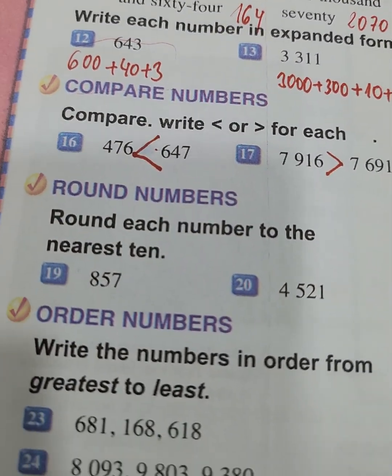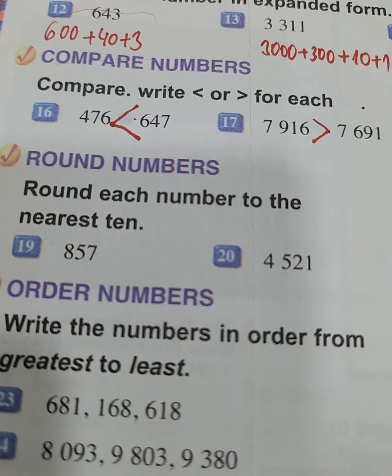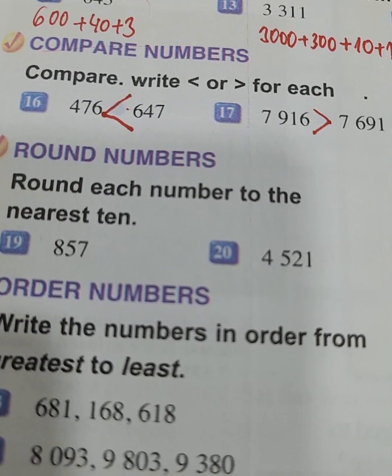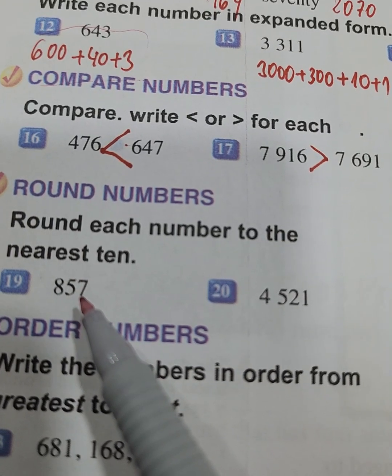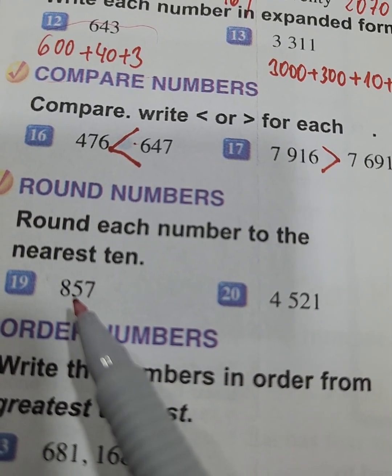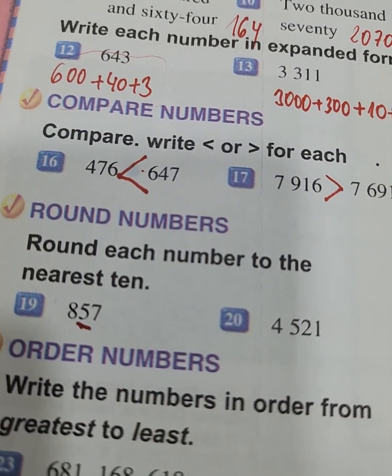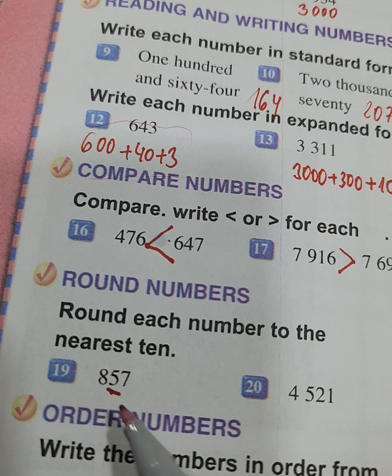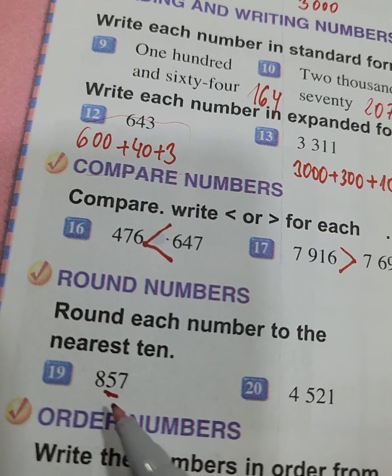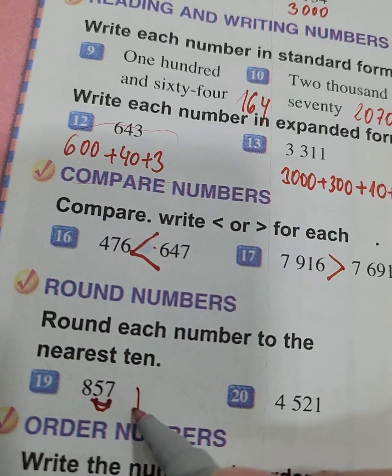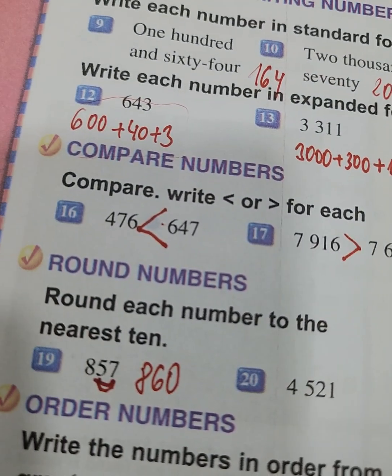We have here the next questions about round numbers. We must round each number to the nearest 10. Let's look where the ones are. We are on the place of ones and here we are on the place of tens, so we will round to this place. For 857, look at this number and you see that after it comes 7.